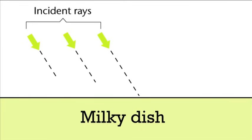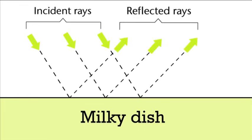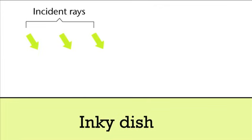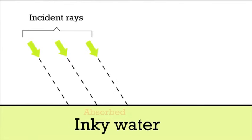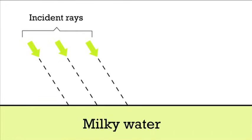What's going on? Looking at the dishes directly, the milky dish appears white because a lot of the incident light is reflected or scattered. The inky dish appears dark because incident light is being absorbed and re-radiated at a different wavelength. The image on the screen is identical, but the darkness is caused by different mechanisms. Light incident on the inky water is not transmitted to the screen mostly because of absorption, whereas light incident on the milky water is not transmitted mostly because of scattering.